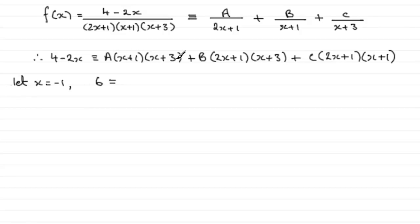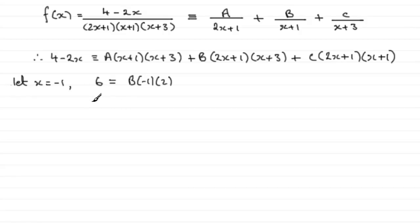With x = -1, the term containing A drops out since (-1+1) = 0. For the B term: 2(-1)+1 = -1 and (-1+3) = 2, giving B times (-1) times 2. The C term also drops out since (-1+3) makes that bracket zero... wait, (-1+1) makes the C bracket zero. So we have 6 = -2B, therefore B = -3.